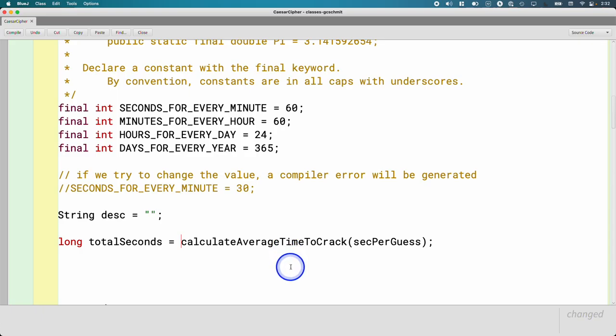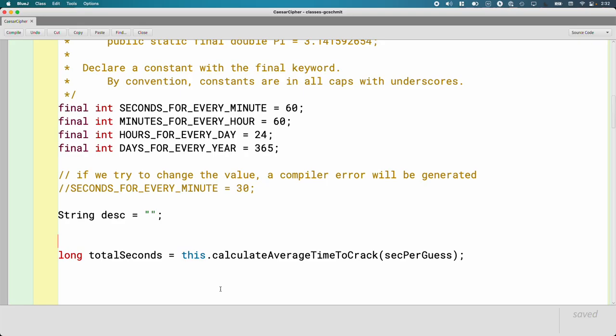Here's the challenge though. I want to call this method, but in general when we call methods, we call them on variables that reference objects. We don't just call a method. So the question is, what variable do I use? This method's in the same class as where I am, but I don't have a Caesar cipher variable that I can say that variable dot calculateAverageTimeToCrack. Does anyone remember what special variable we could use here? This is where we use this dot calculateAverageTimeToCrack.